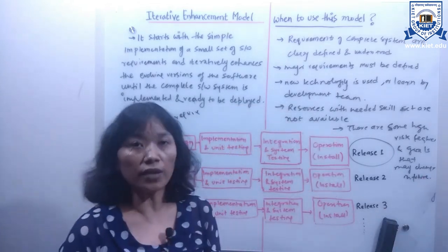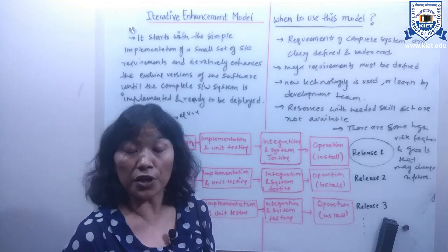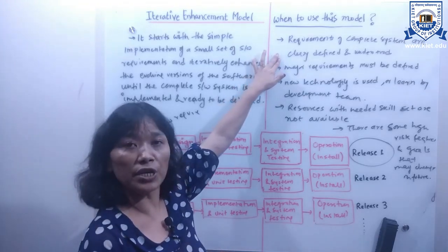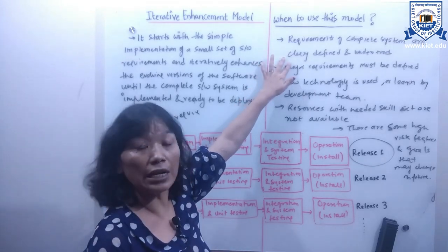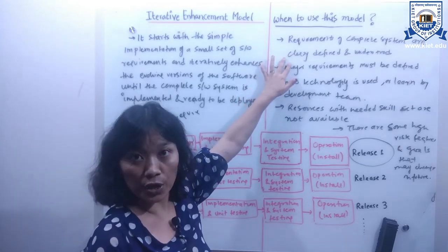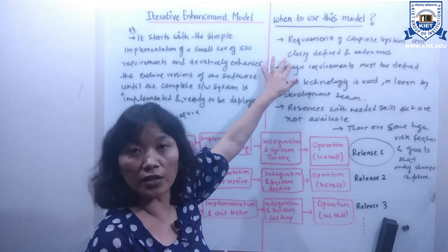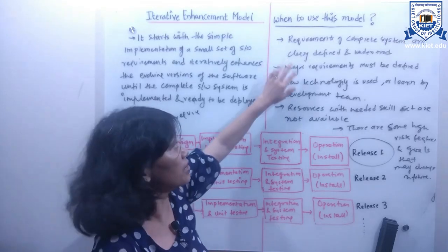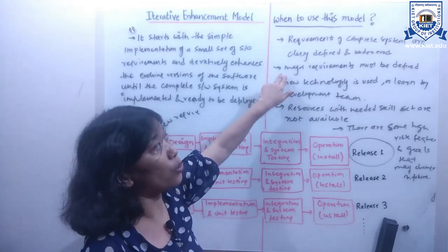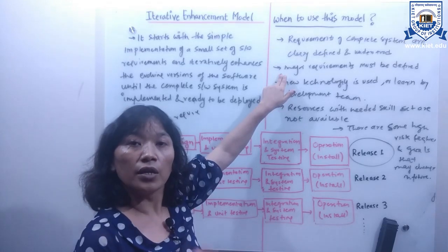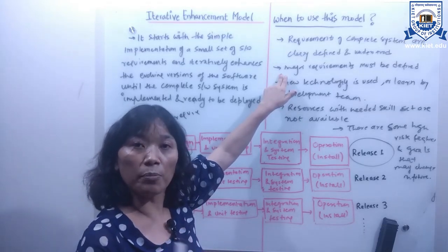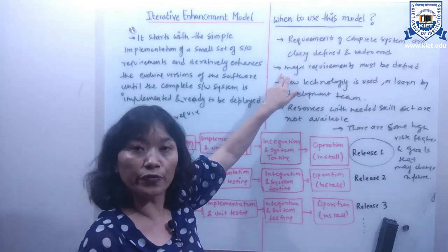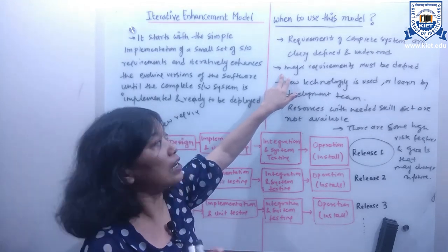Now let's look at when we need to use the iterative enhancement model. First, when the requirements of the complete software system are clearly defined and understood — meaning when starting a project using this model, I should have all the requirements. Second, major requirements must be defined, meaning the requirements that are prior to the customer or the important features of the software system should be clearly defined.